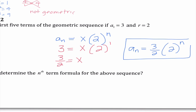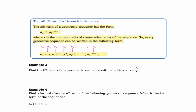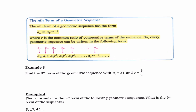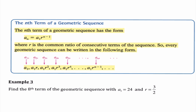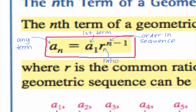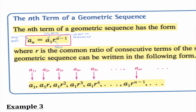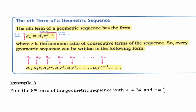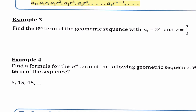We're going to learn what we can do to find the nth term of any geometric sequence. The nth term of a geometric sequence has the form: aₙ = a₁ times r to the (n−1) power. aₙ is any term in the sequence, n is its position in the sequence, a₁ is our first term, and r is our common ratio. If something is geometric, we need to have this specific formula memorized.